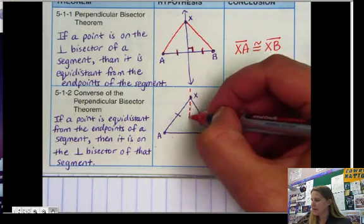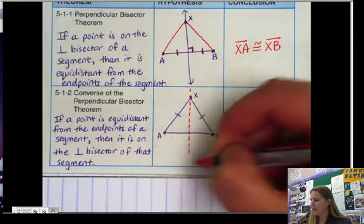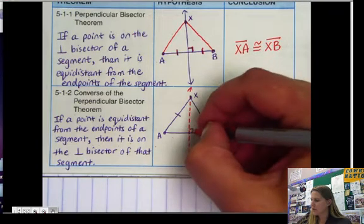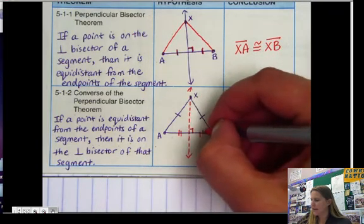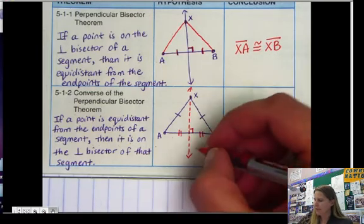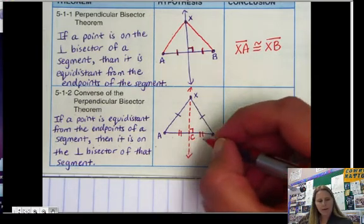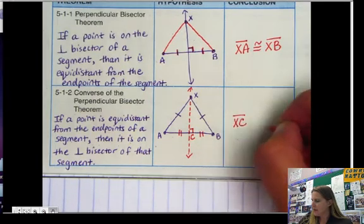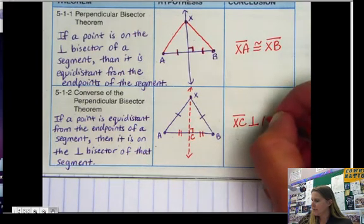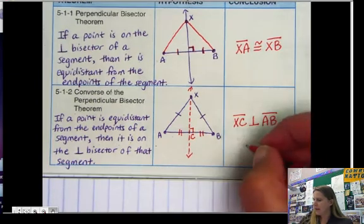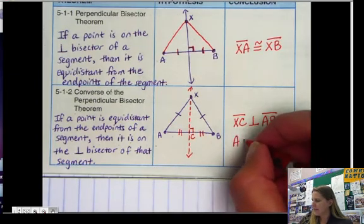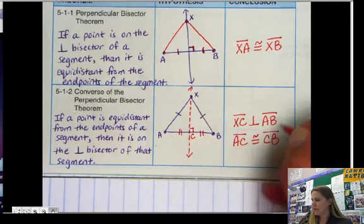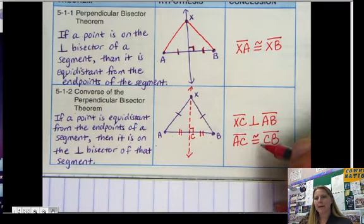So if I were to draw in the perpendicular bisector, it would go right through point x. So this would be the perpendicular bisector. If we add another point here, xC, we can say that xC is perpendicular to AB. And we can also say that AC is congruent to CB, because it's the perpendicular bisector.